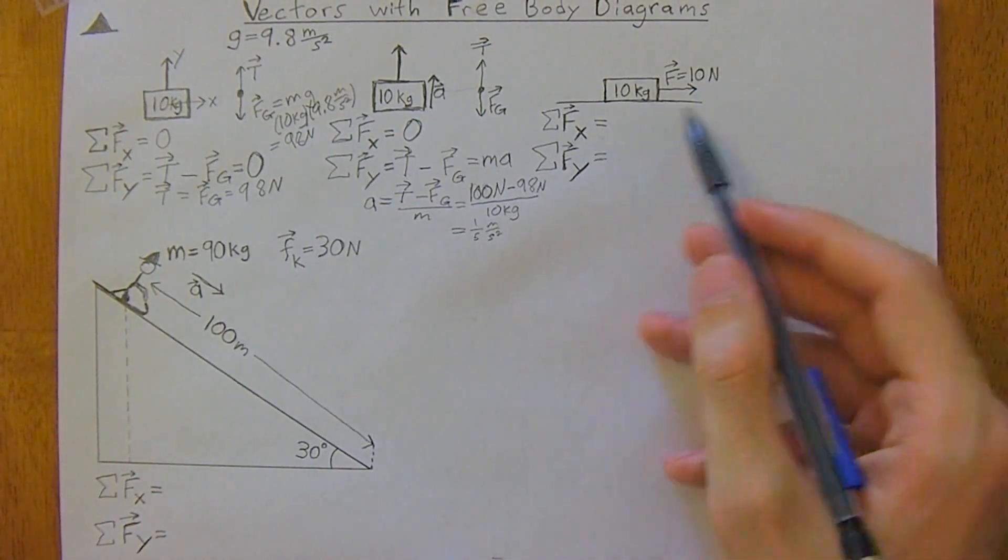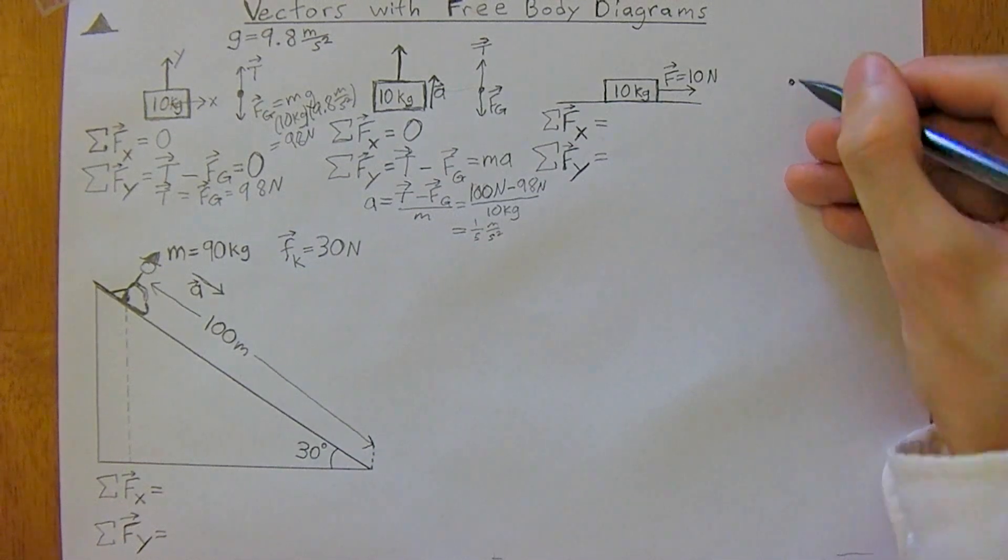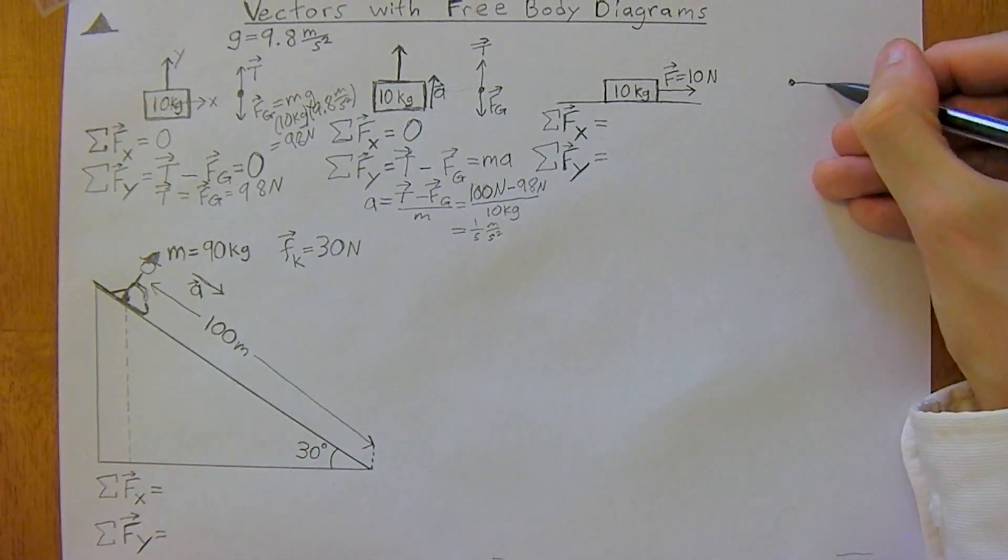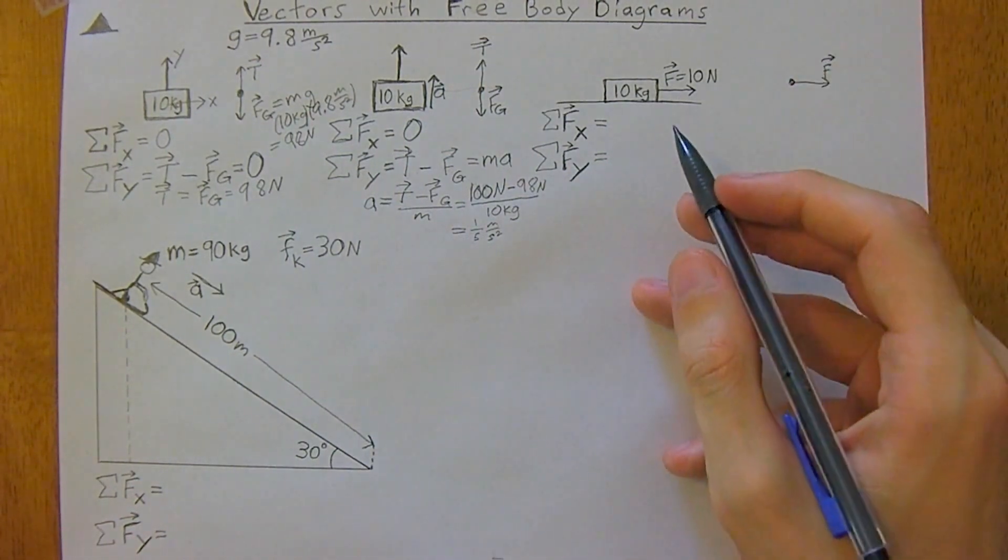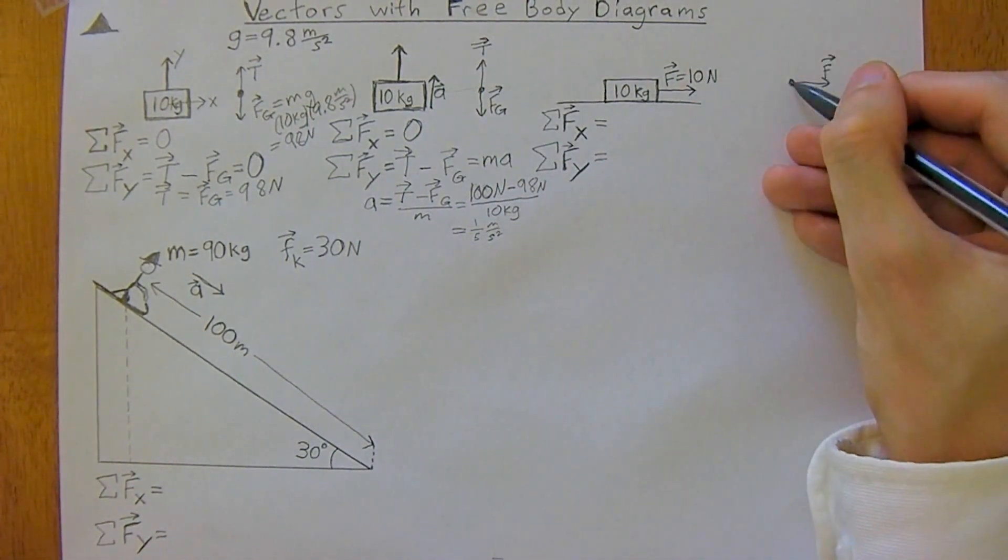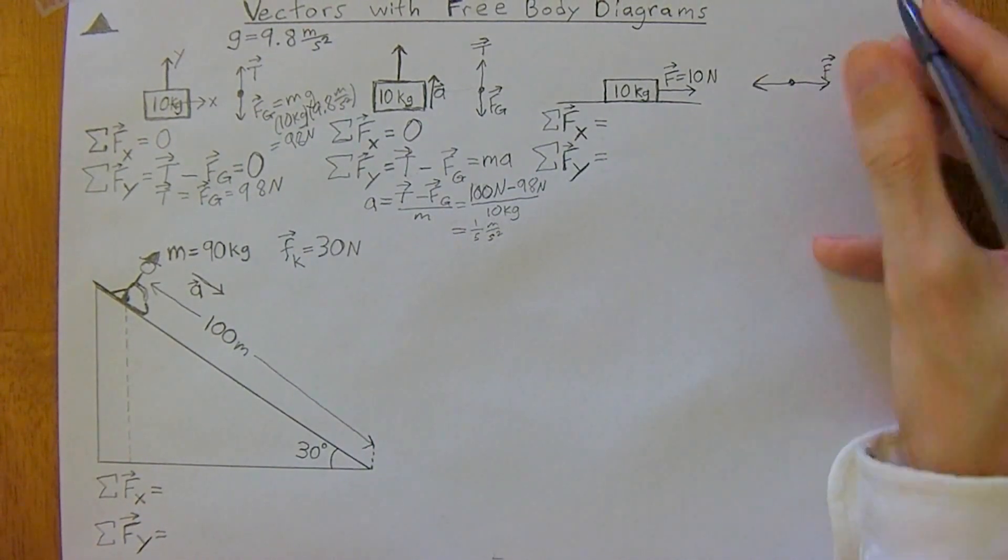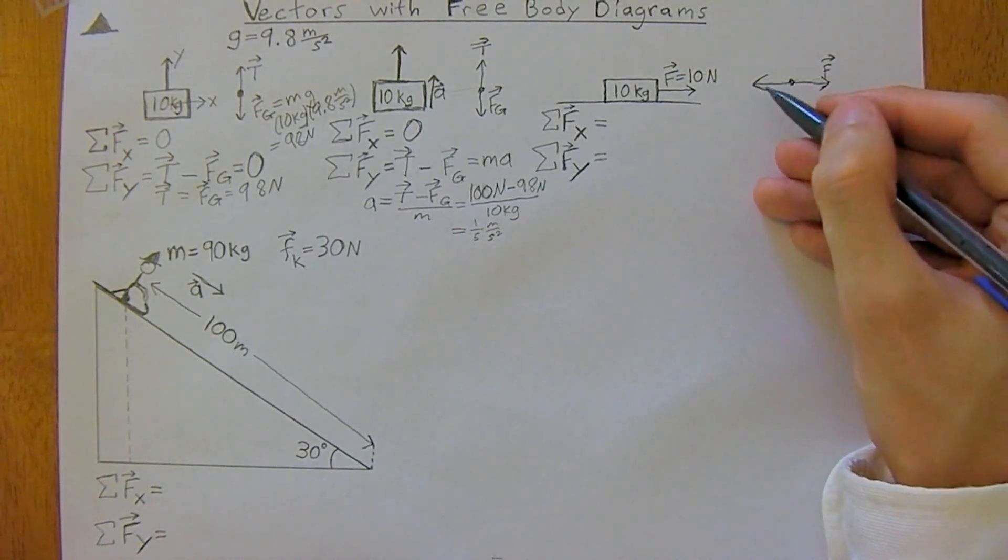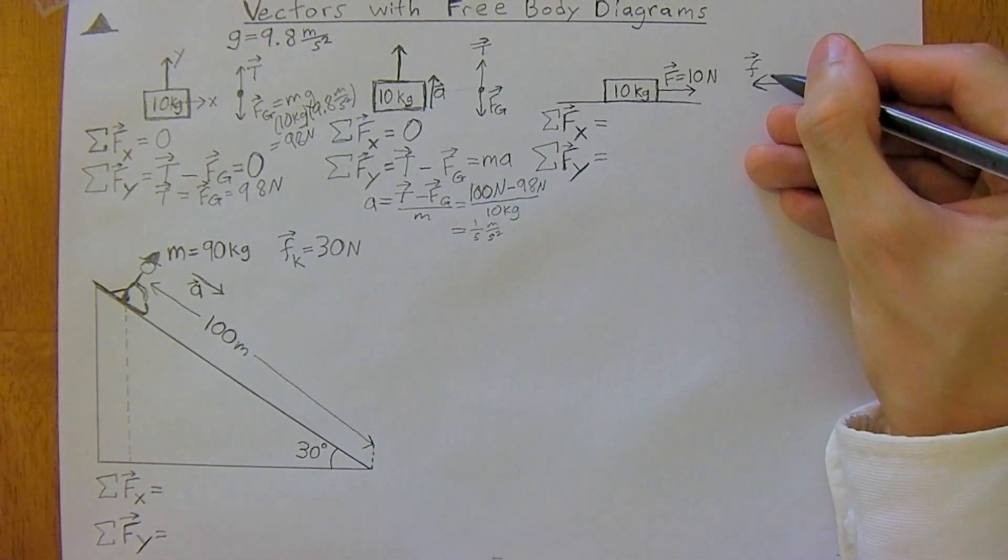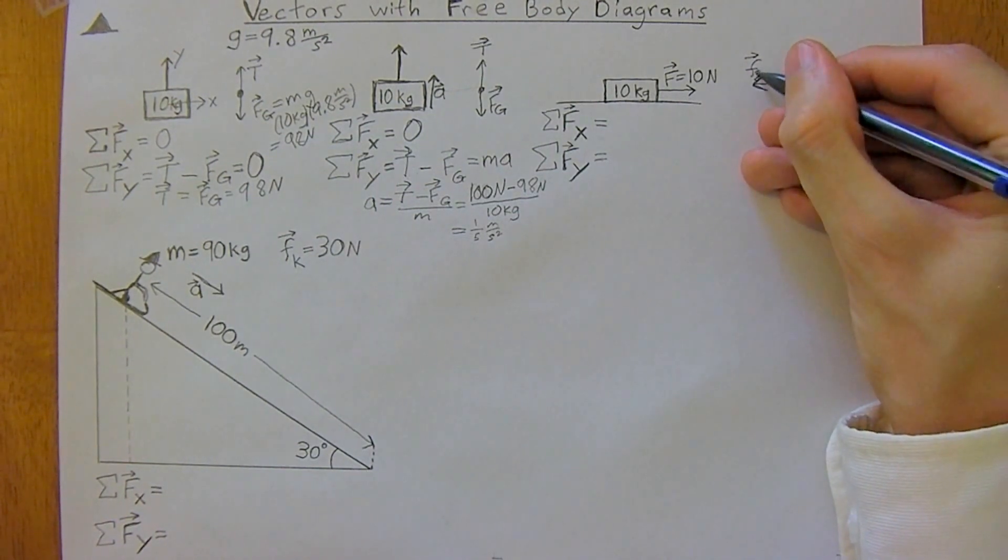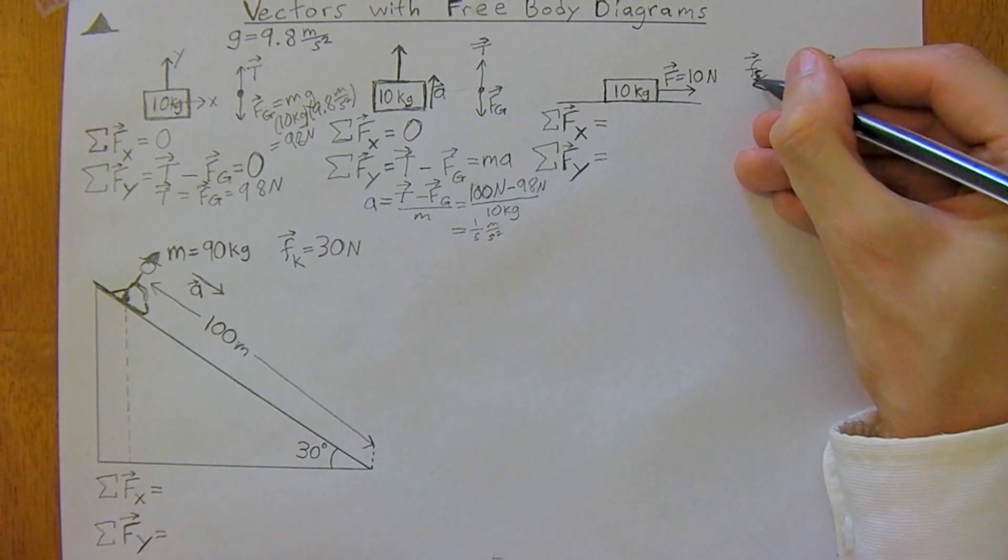Now, we have another example here, and let's do our free body diagram. We have a force, pointing to the right, and we have, it's not moving. So, we have a counteracting, and these are the same magnitude, a counteracting vector, which is going to be the force of static friction, holding it in place. That's an S there, hopefully you can see it. Static friction.